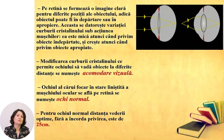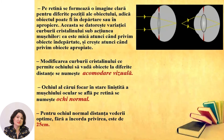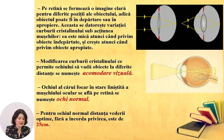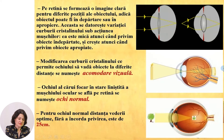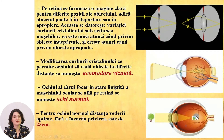The optimal viewing distance for a normal eye is 25 cm — or, as our ancestors said, the distance of one cubit (elbow). However, unfortunately, sometimes the image forms behind the retina, or sometimes it forms in front of the retina. In these situations, we speak of a vision defect.